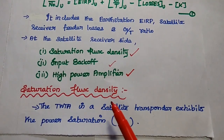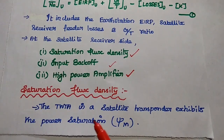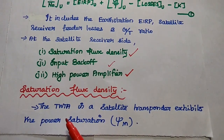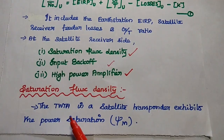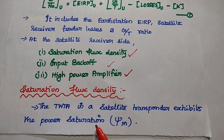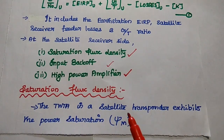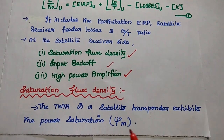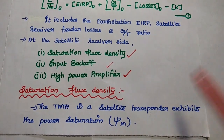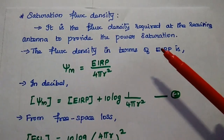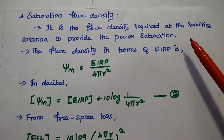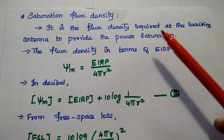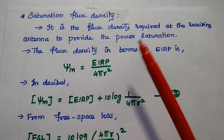For saturation flux density, we consider the TWTA — Traveling Wave Tube Amplifier — which is a high power amplifier used in the satellite transponder. It has to exhibit some power saturation. In order to provide power saturation in the satellite transponder, the proper flux density is required at the receiving antenna.